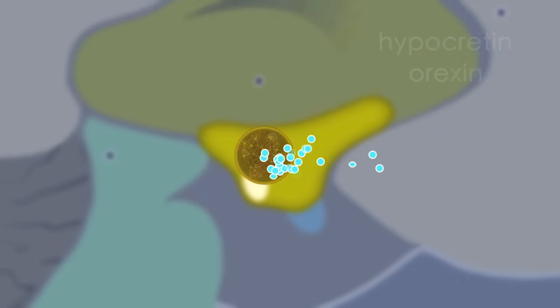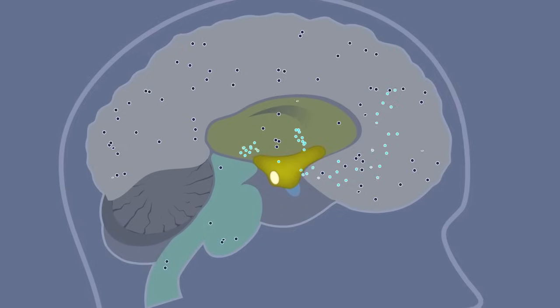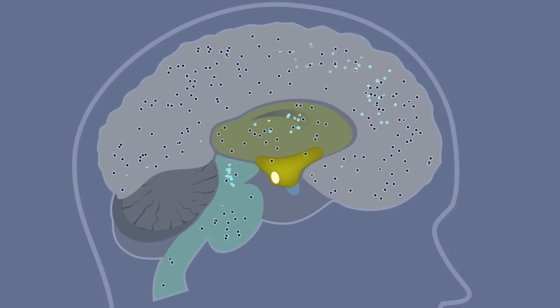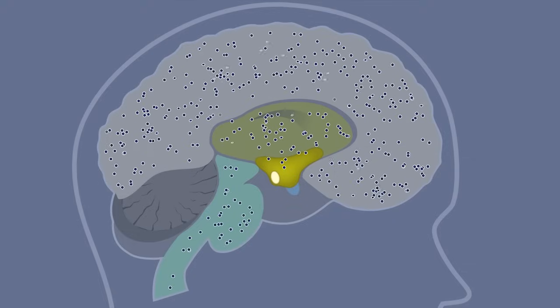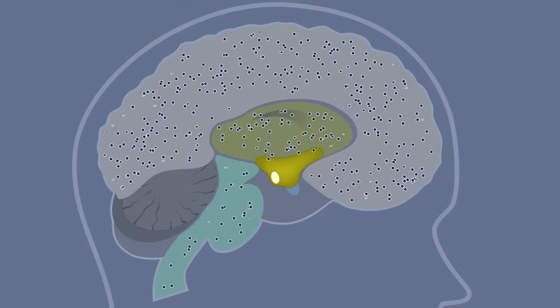The hypocretin producing cells help activate and sustain activity in the other wake promoting brain regions across the day. The brain contains billions of neurons, and only a very, very small number of these produce hypocretin. It's probably somewhere between 100,000 and 200,000, which sounds like a large number, but when you compare it to 10 billion neurons, it's really very small.